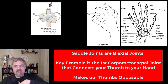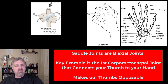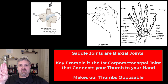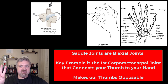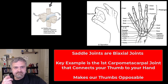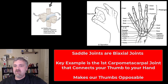Next we have the saddle joint, which looks like two saddles sitting on top of each other. The surfaces are concave in one direction and convex in the other, allowing the two bones to fit together for special movement. These are biaxial joints. The key example is the first carpometacarpal joint — the joint connecting the trapezium carpal bone to the first metacarpal of your thumb. I can move my thumb in one plane, but also across the palm of my hand. This is opposition — an opposable thumb allows us to grasp tools. Opposition is the movement of the thumb across the palm toward the pinky finger; reposition brings it back. Our large frontal lobe and opposable thumbs are really why humans have dominated this planet.